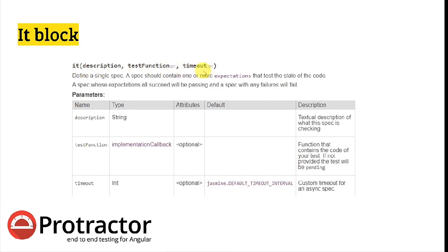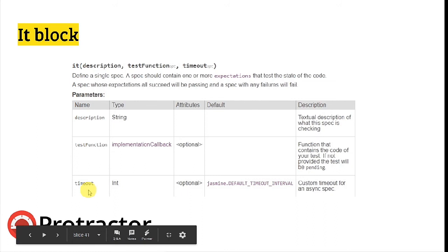What the it block does is define a single specification. A specification should contain one or more expectations that test the state of the code. A specification whose expectations all succeed will be passing, and one with any failure will fail. The description is a string — you can put your test case name there. Inside the function you write all the steps and expect conditions. The timeout is optional and specified in milliseconds; once that period lapses, a timeout error is thrown.